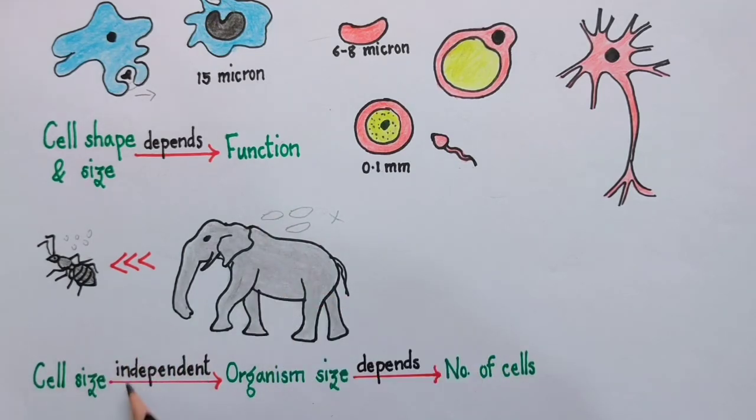Finally, we can come to one more conclusion that the cell size is independent of the organism size. Then what decides the size of the organism? The size of the organism is going to depend upon the number of cells in its body. Or I can also say that organism size is independent of the cell size, but rather it depends upon the number of cells.